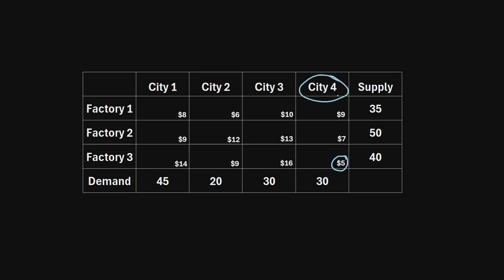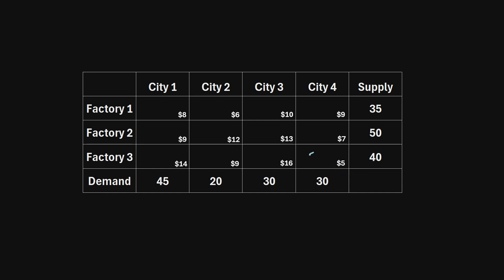The $5 cell belongs to city four's column, which has a total demand of 30 units. This route is supplied by factory three, which has a total supply of 40. Since the supply exceeds the demand, we can fully meet city four's demand. We send 30 units from factory three to city four, cross out city four's demand, and reduce factory three's supply from 40 to 10.